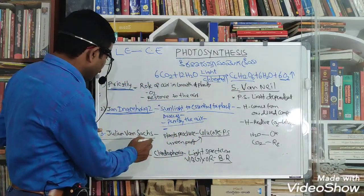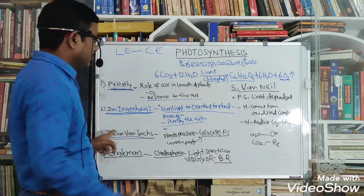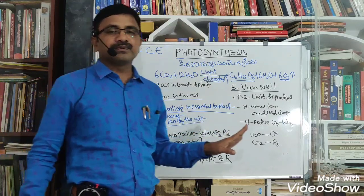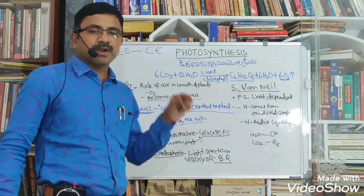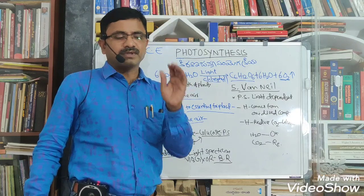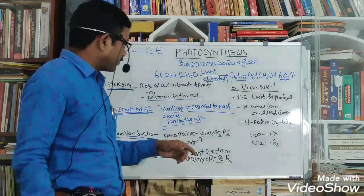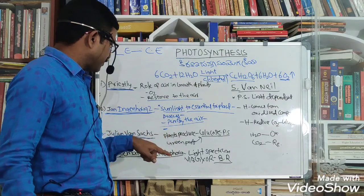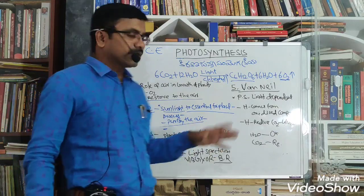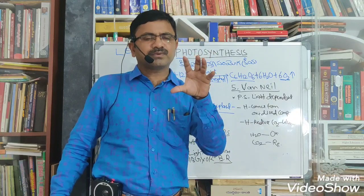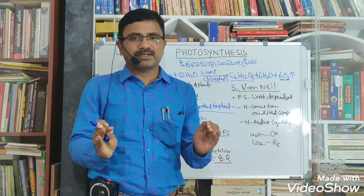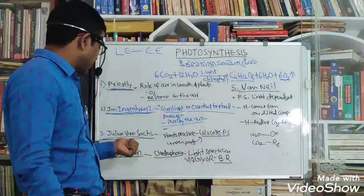Next, Julius von Sachs. Julius von Sachs provided information — for the first time he stated that plants produce glucose, and that the glucose is stored in the form of starch. This is the information provided by von Sachs.